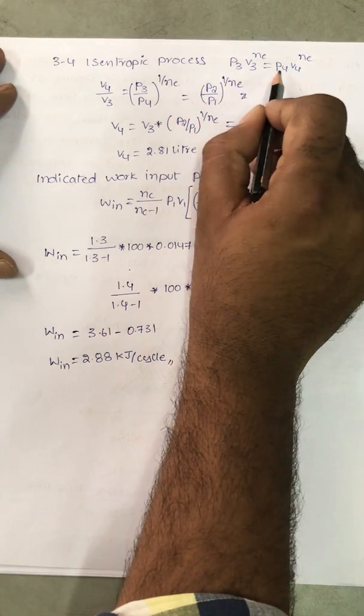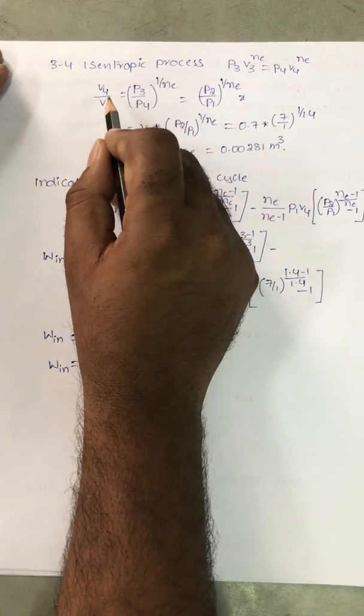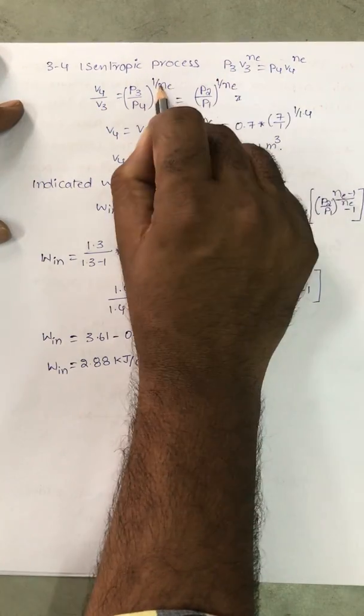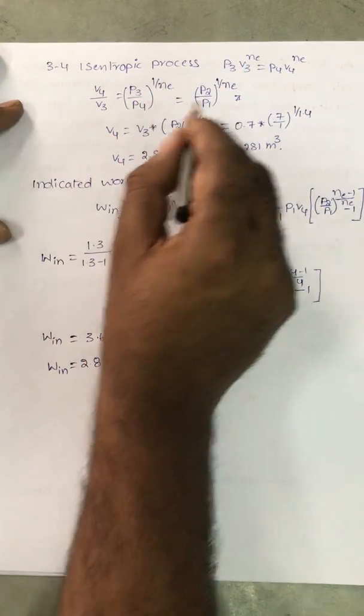P3 V3 power Ne is equal to P4 V4 power Ne, where Ne means expansion index. From this you can write V4 by V3 is equal to P3 by P4 all power 1 by Ne.